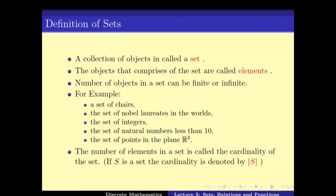The number of elements in a set is called the cardinality of the set. It is usually denoted by this notation — if S is the set, then S between two vertical lines denotes the cardinality of the set.